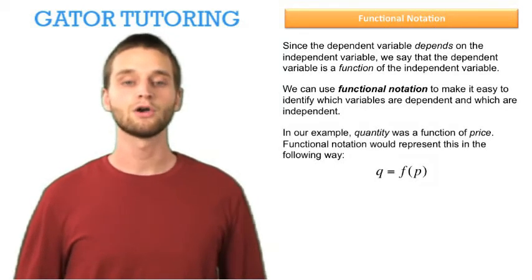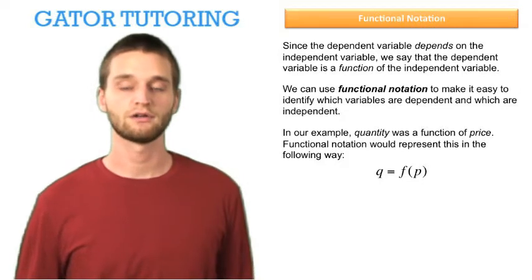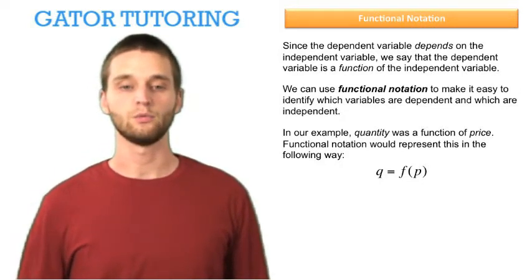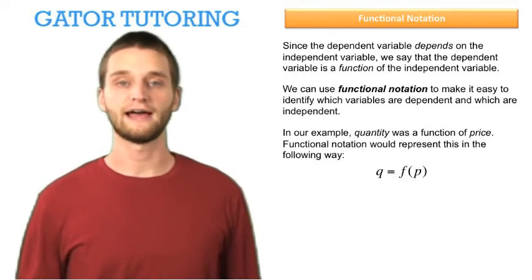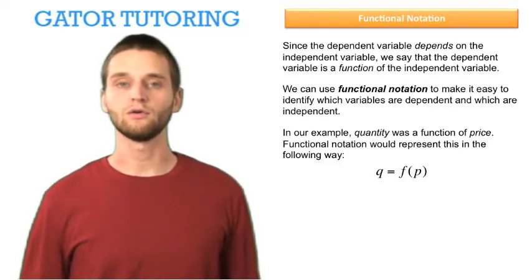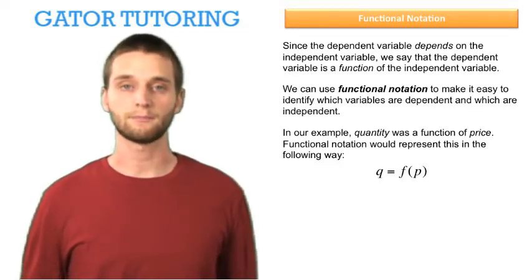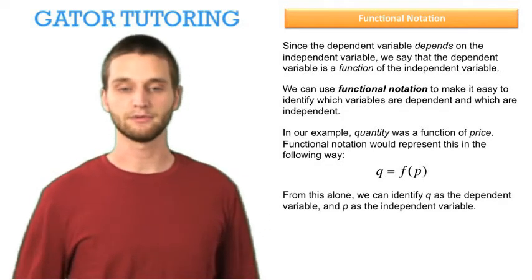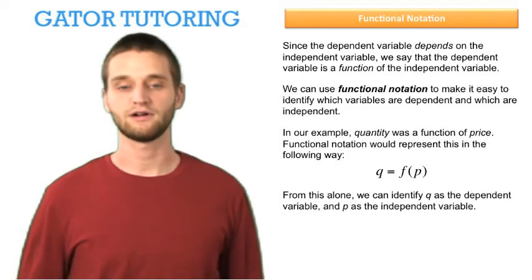In our example, quantity was a function of price. Functional notation would represent this in the following way: we would just write Q equals f of P, or Q is a function of P. From this alone, we can identify Q as the dependent variable and P as the independent variable.